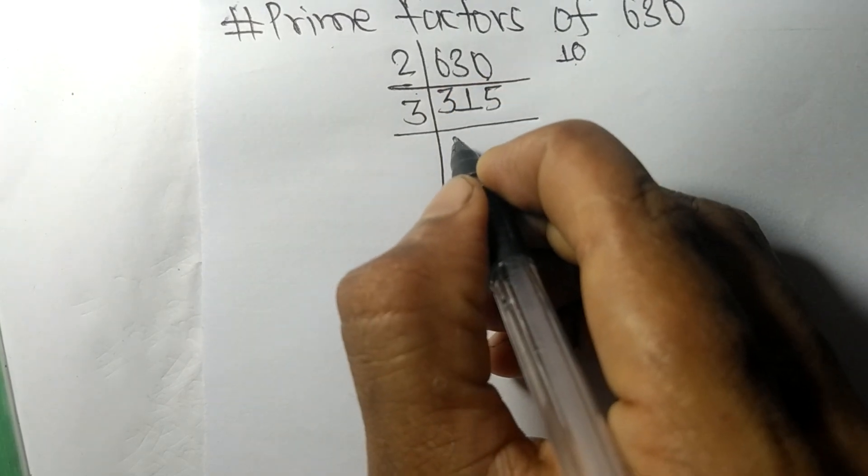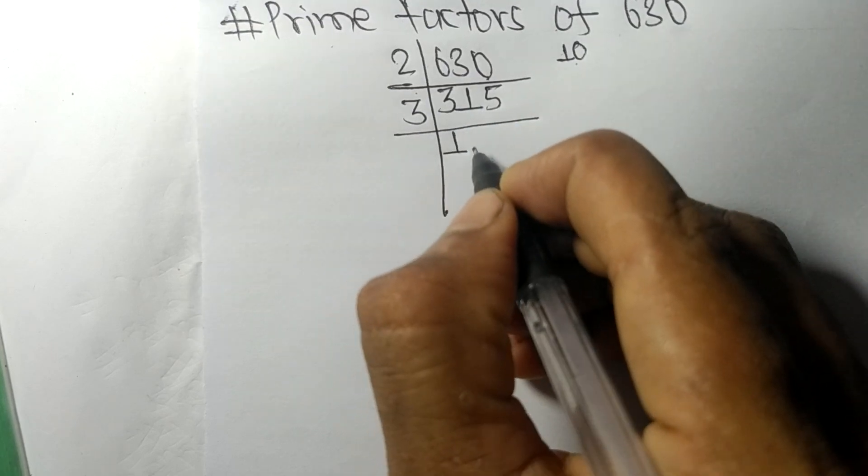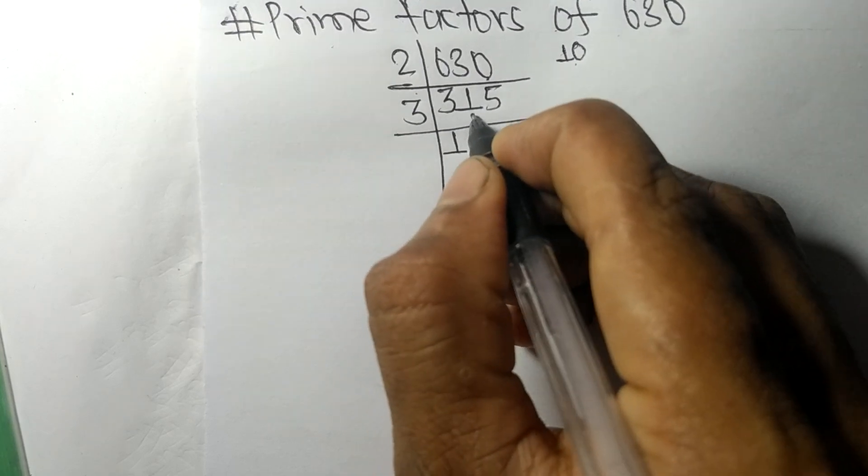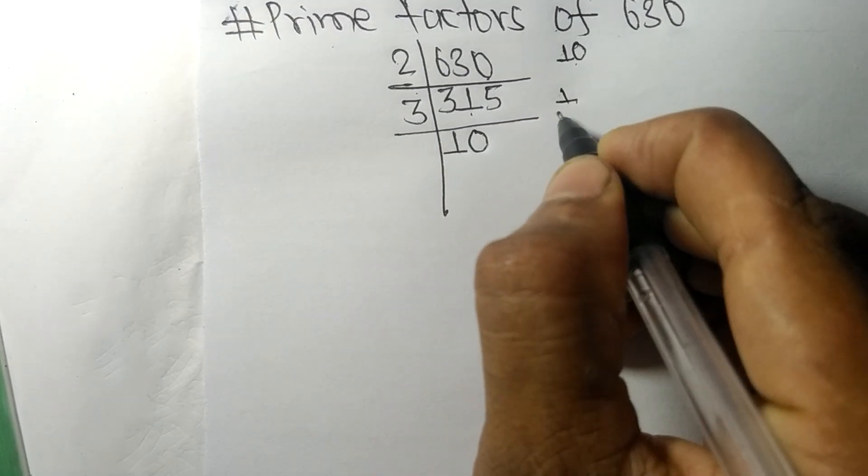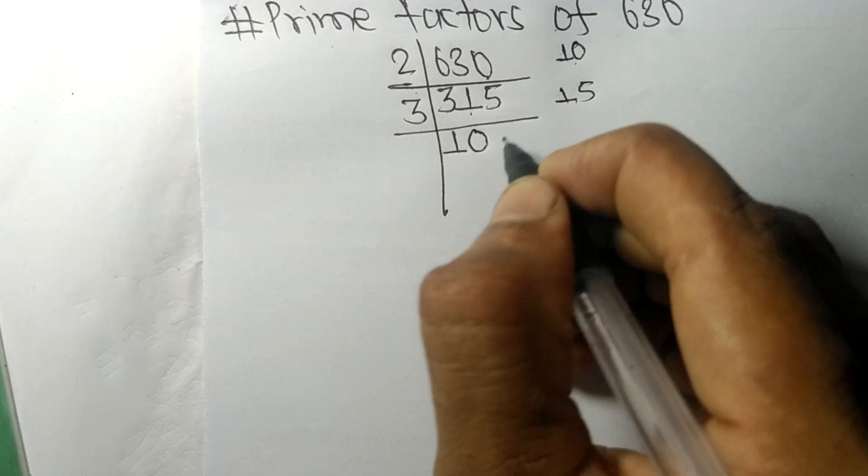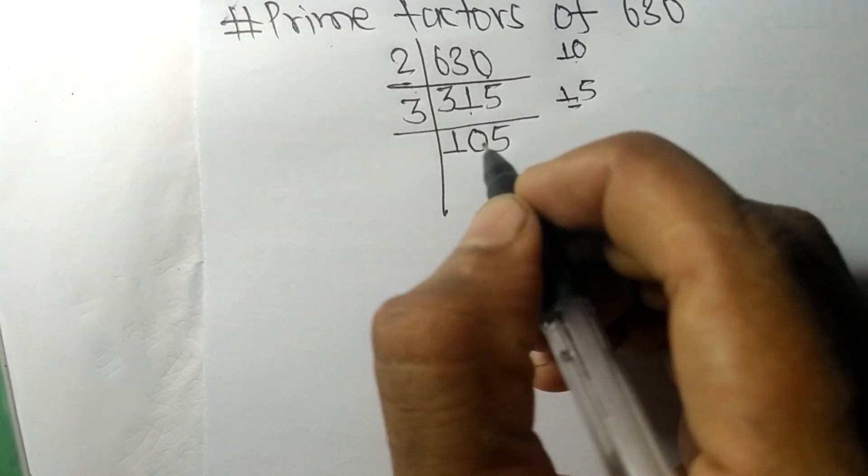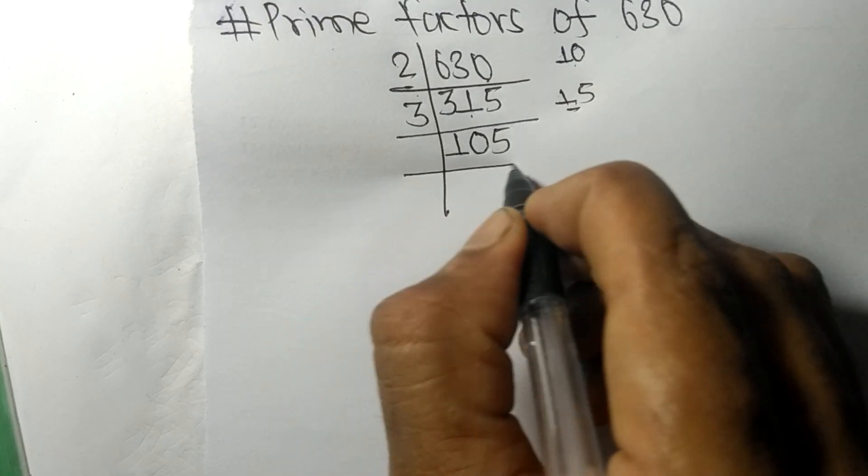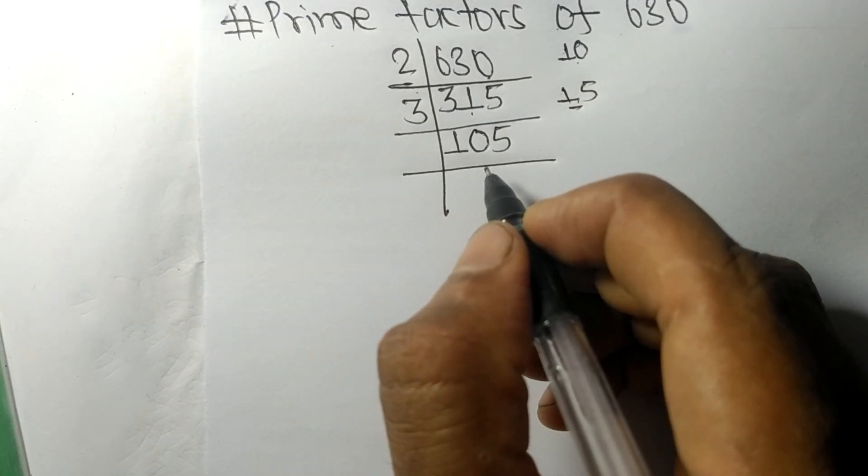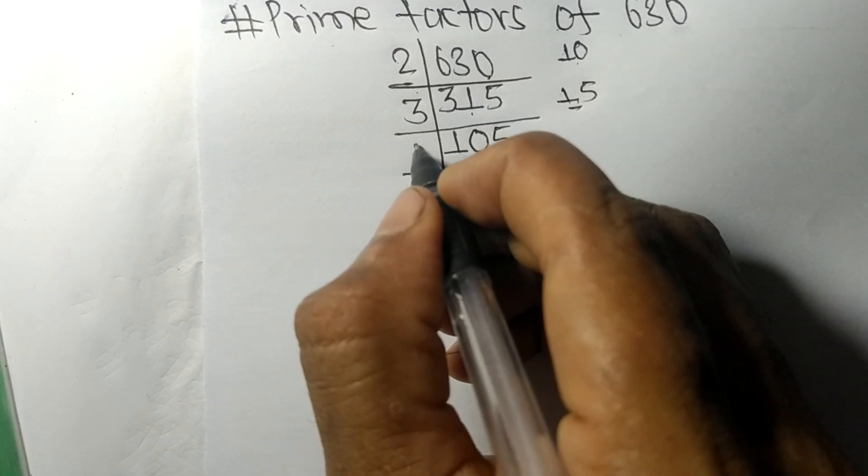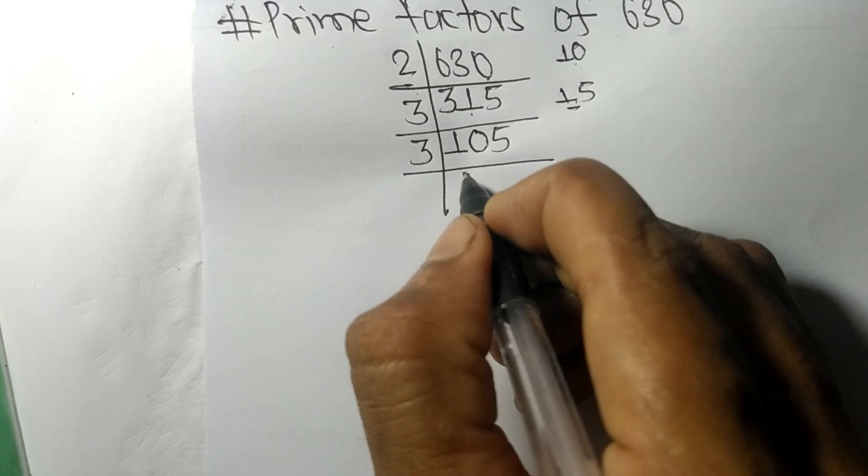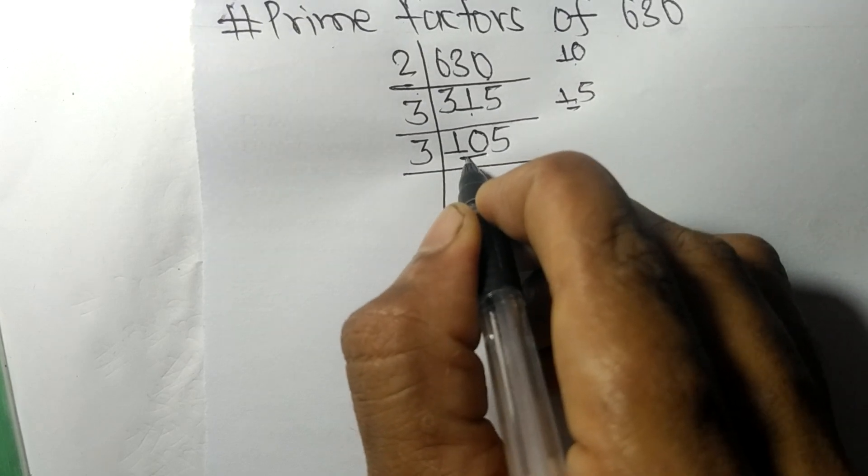3 times 1 means 3, 3 times 0 means 0, remainder 1. And this 5: 15, 3 times 5 means 15. So now we got 105, which is again divisible by 3. 3 times 3 means 9, remainder 1.